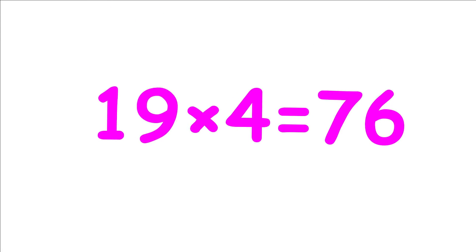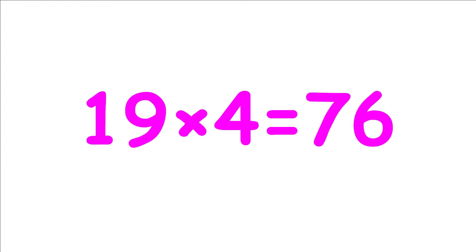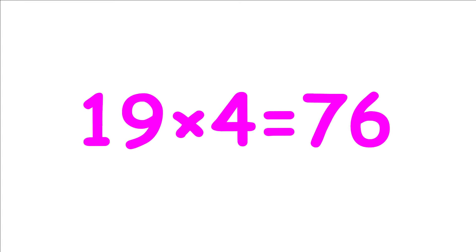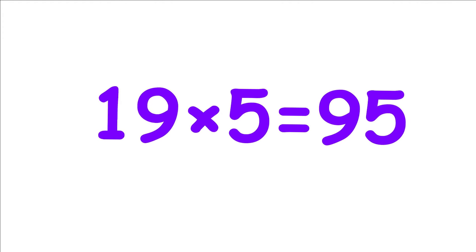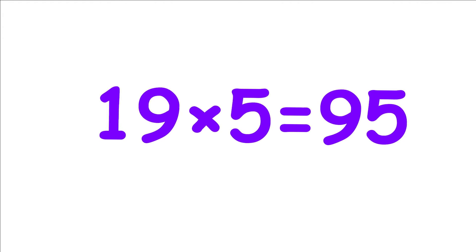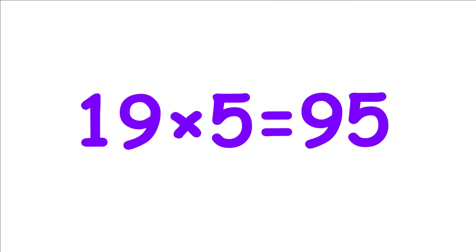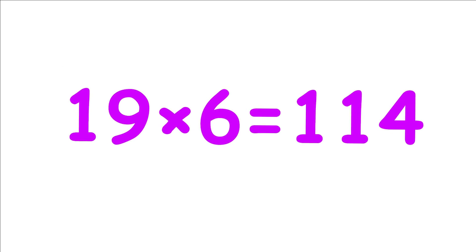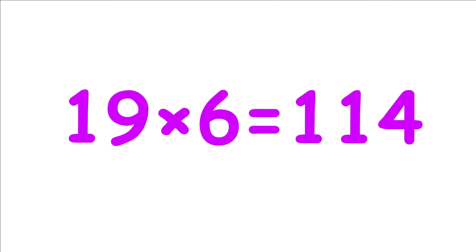19 multiplied by 4 equals 76. 19 multiplied by 5 equals 95. 19 multiplied by 6 equals 114.